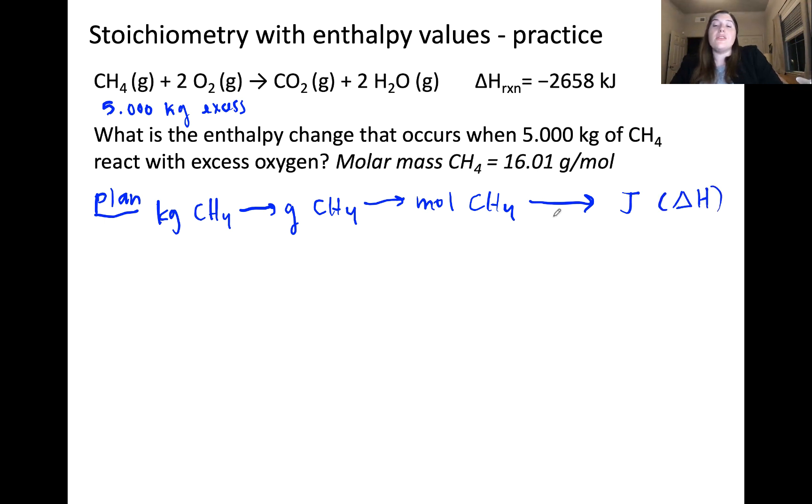We can do this using a conversion factor, which is that delta H of the reaction as written is equal to negative 2,658 kilojoules per one mole of methane. Again this one mole of methane is coming from the stoichiometric coefficient in front of methane.